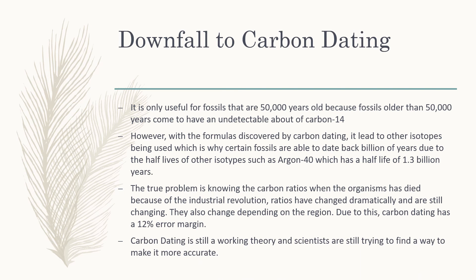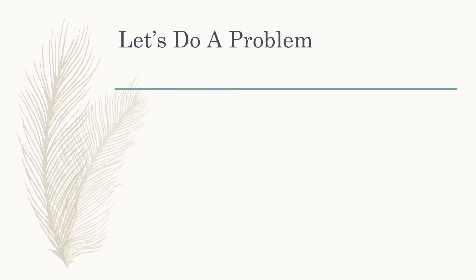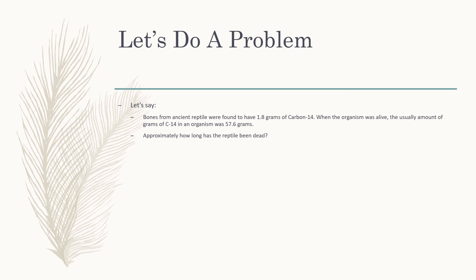Also, because carbon dating is still a working theory and hasn't been 100% confirmed as fact, scientists are still working on ways to more accurately date things on Earth. So let's do a practice problem to show how this formula is used. Say bones from an ancient reptile were found to have 1.8 grams of carbon-14 today, and we know that when the organism was alive, the usual amount of carbon-14 was 57.6 grams.